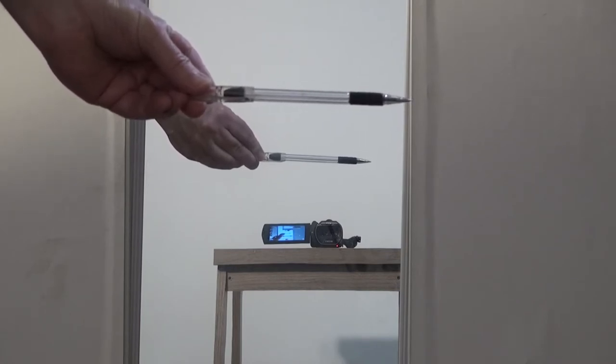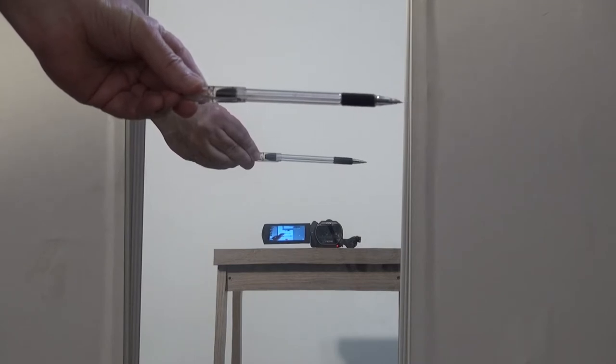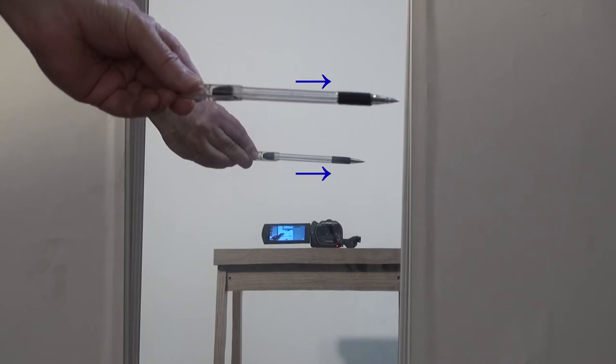If we hold the pencil to the right, the mirror image of the pencil is also toward the right. This means that the mirror is not reversing right and left.